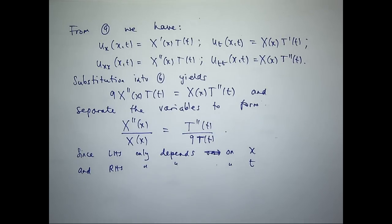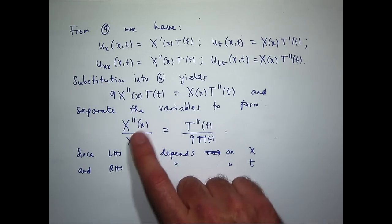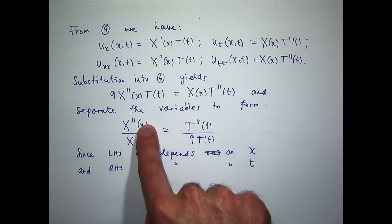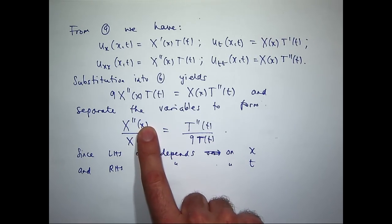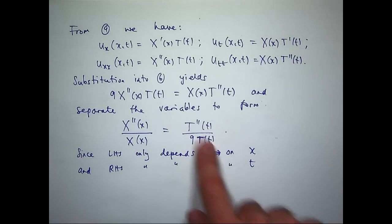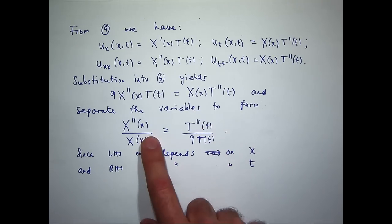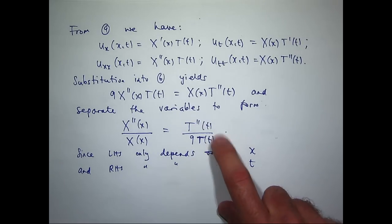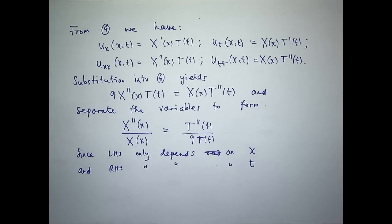The justification is: if I vary x, the left-hand side would change, but the right-hand side doesn't depend on x and these things are equal, so it can't change. Similarly, if I vary t, the right-hand side would change, but the left-hand side doesn't depend on t. The only explanation is that there must be a separation constant.